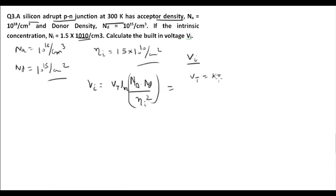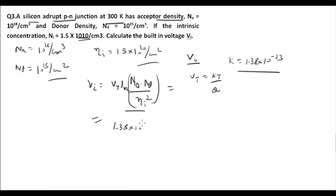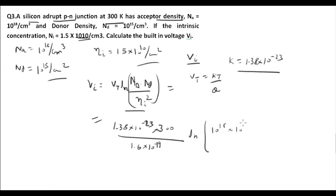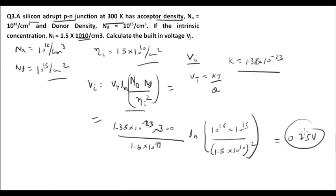We know Vt = kT/q, where k = 1.38 × 10⁻²³ J/K. Putting all values: Vt = (1.38 × 10⁻²³ × 300) / (1.6 × 10⁻¹⁹). Then V0 = Vt × ln(10^18 × 10^15 / (1.5 × 10^10)²). On solving, we get a built-in voltage of 0.75 V. This is how we calculate built-in voltage.